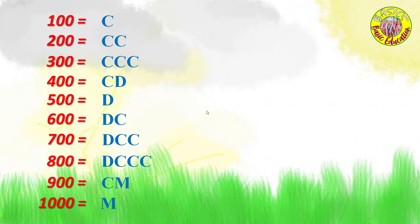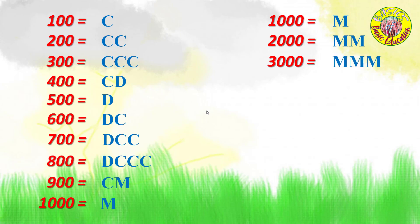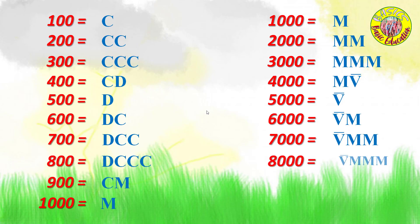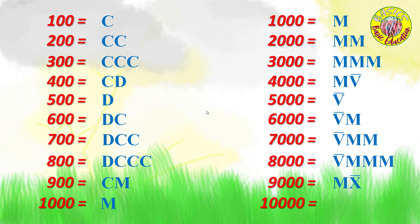1,000, 2,000, 3,000, 4,000, 5,000, 6,000, 7,000, 8,000, 9,000, 10,000.